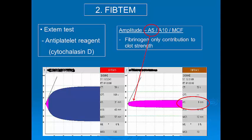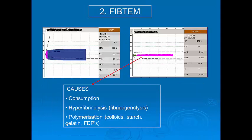The FibTEM A5, or amplitude at 5 minutes, allows us to very rapidly identify fibrinogen deficiency. A low FibTEM can be due to a number of causes. The most common are rapid consumption, fibrinolysis and fibrinogenolysis, and polymerization disorders caused by colloids or fibrin degradation products. Traditional coagulation tests measuring fibrinogen cannot detect these functional problems with polymerization, and are also not usually as rapidly available as the FibTEM A5.